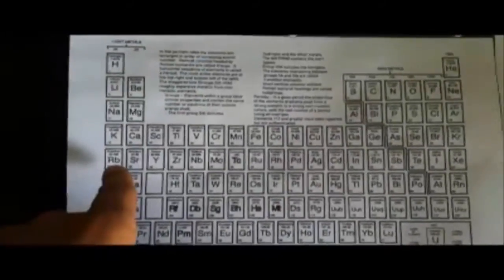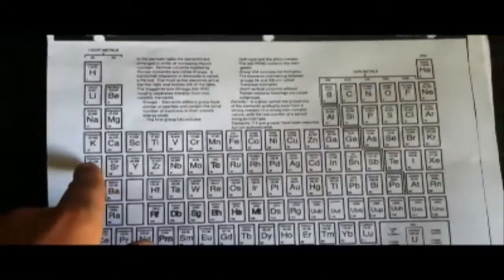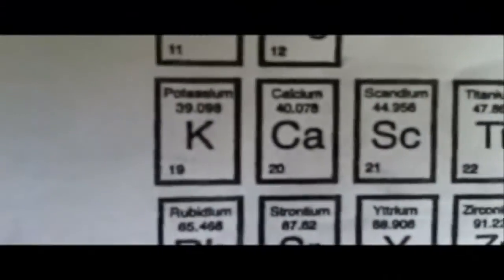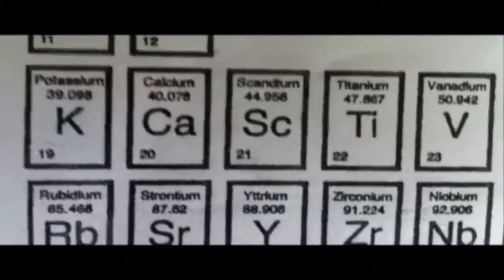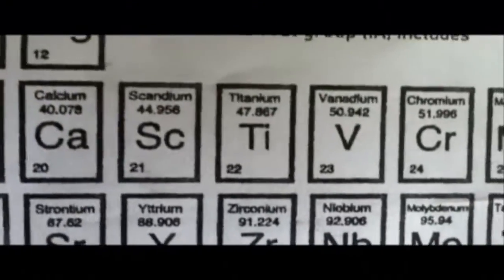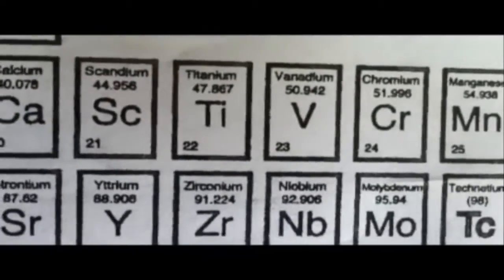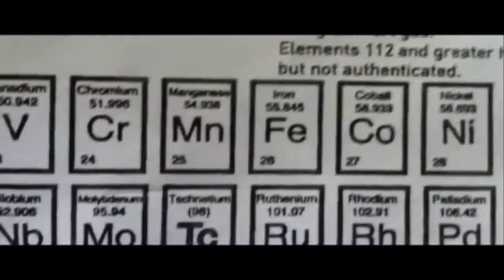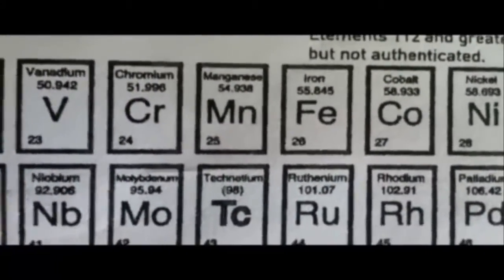And the horizontal rows are called periods. They just go in order of their atomic number. For example: 19, 20, 21, 22, 23, 24, and guess what? 25.